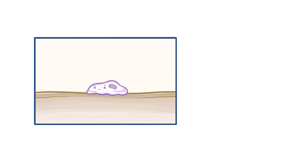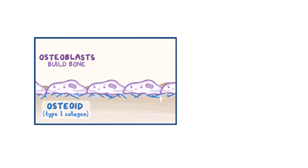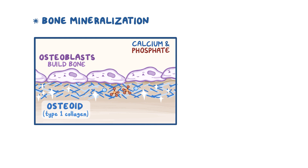Now for bones to grow and develop properly, special bone cells called osteoblasts are hard at work. To build bone, osteoblasts secrete osteoid, which is an organic matrix made up of type 1 collagen. These collagen fibers are the framework for the osteoblasts' work. Osteoblasts then deposit calcium and phosphate crystals into the framework. This process is called bone mineralization, and it confers strength to the growing bones. Bone mineralization is dependent on an enzyme called alkaline phosphatase, which increases in response to osteoblast activity.